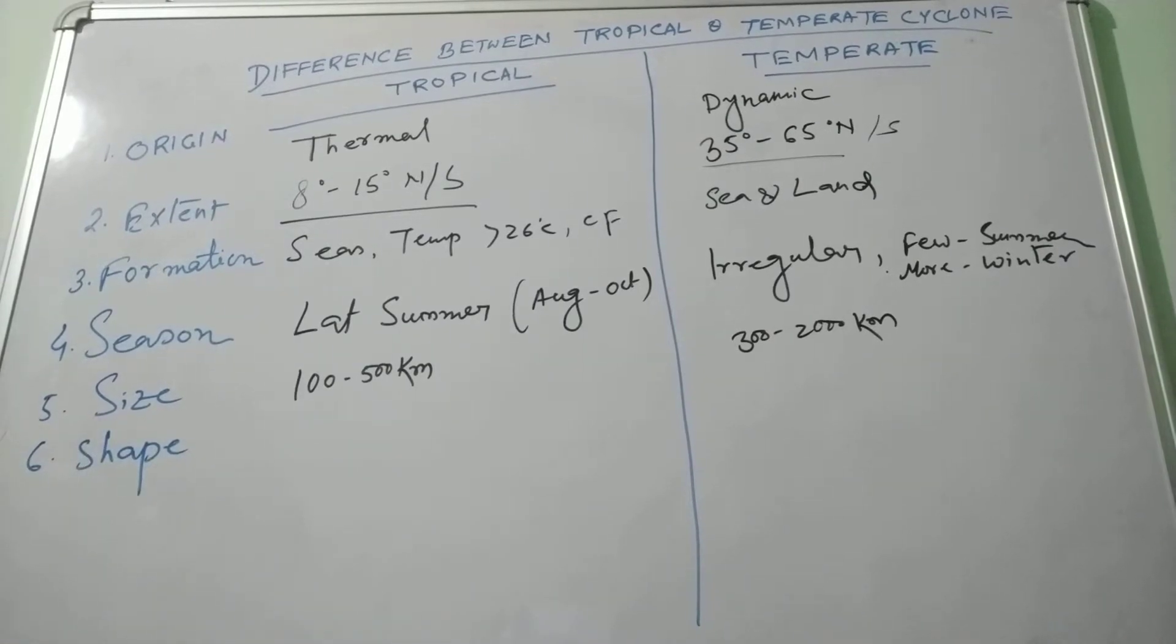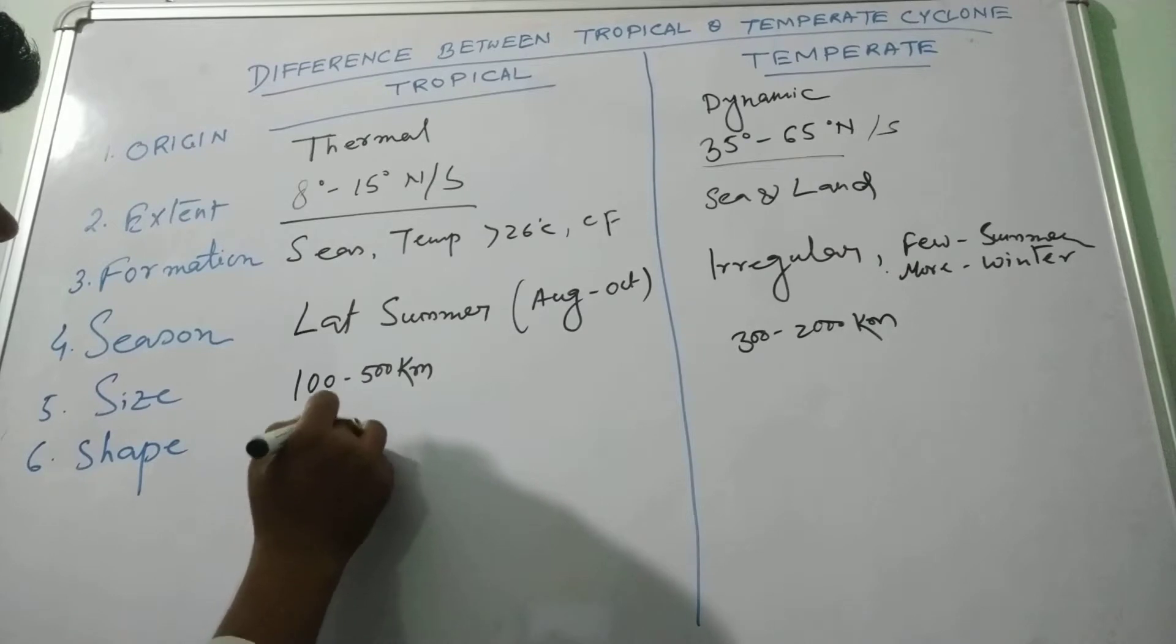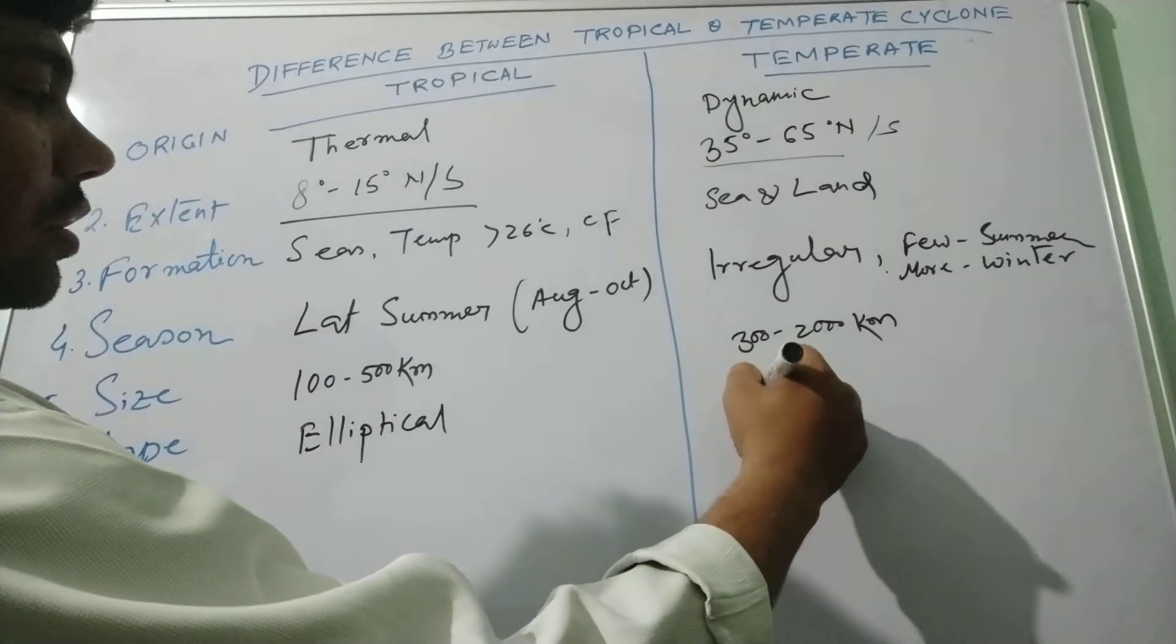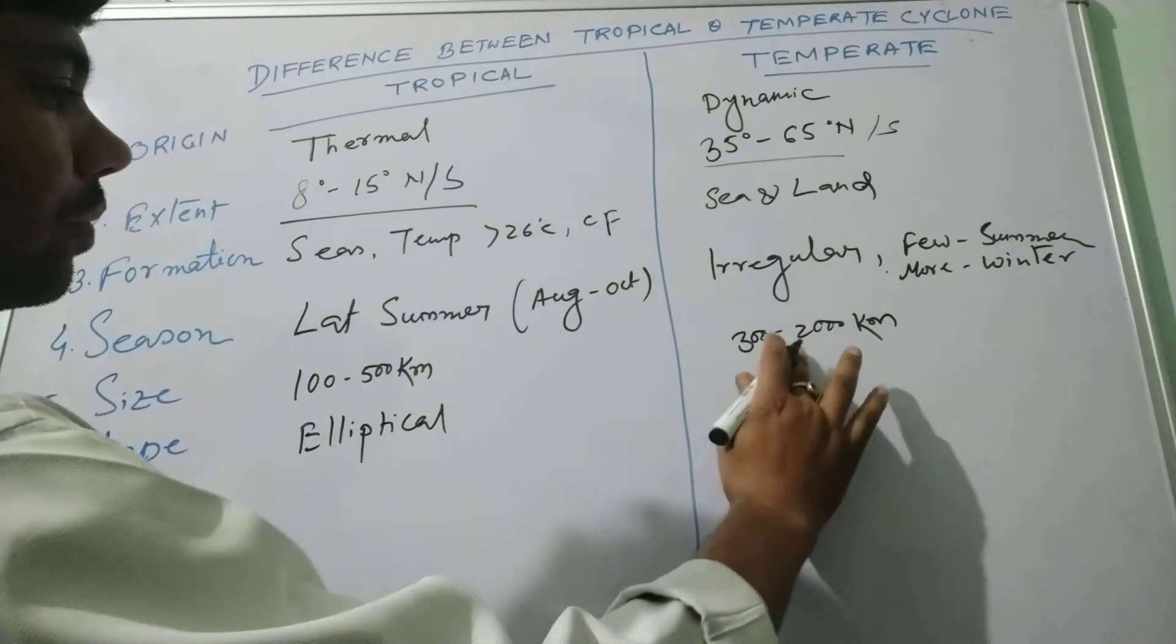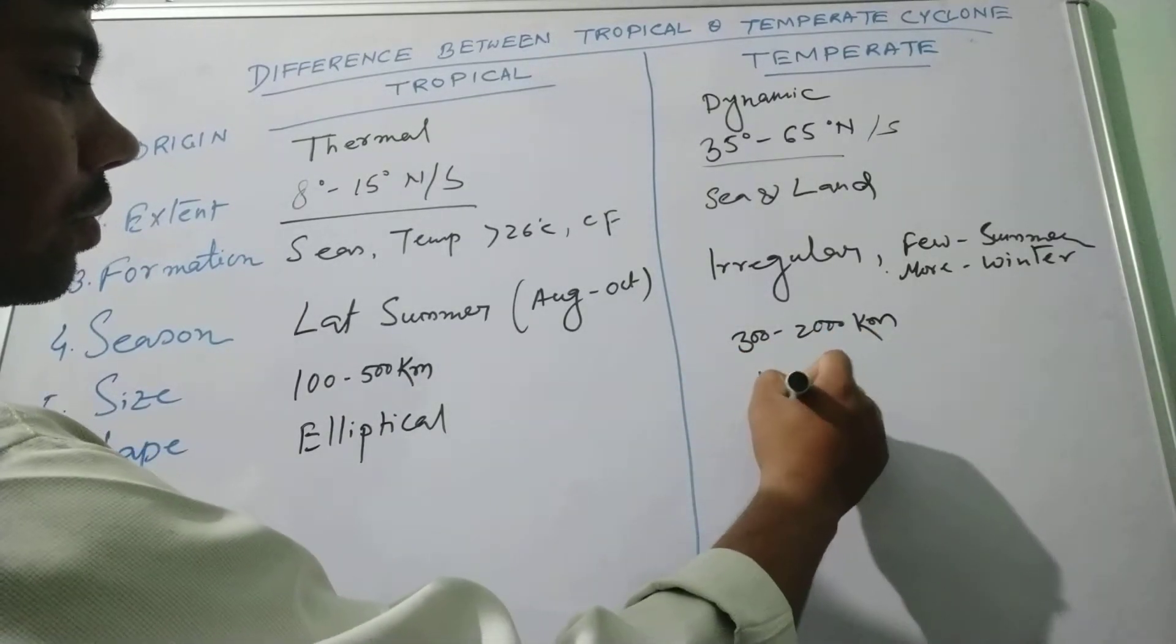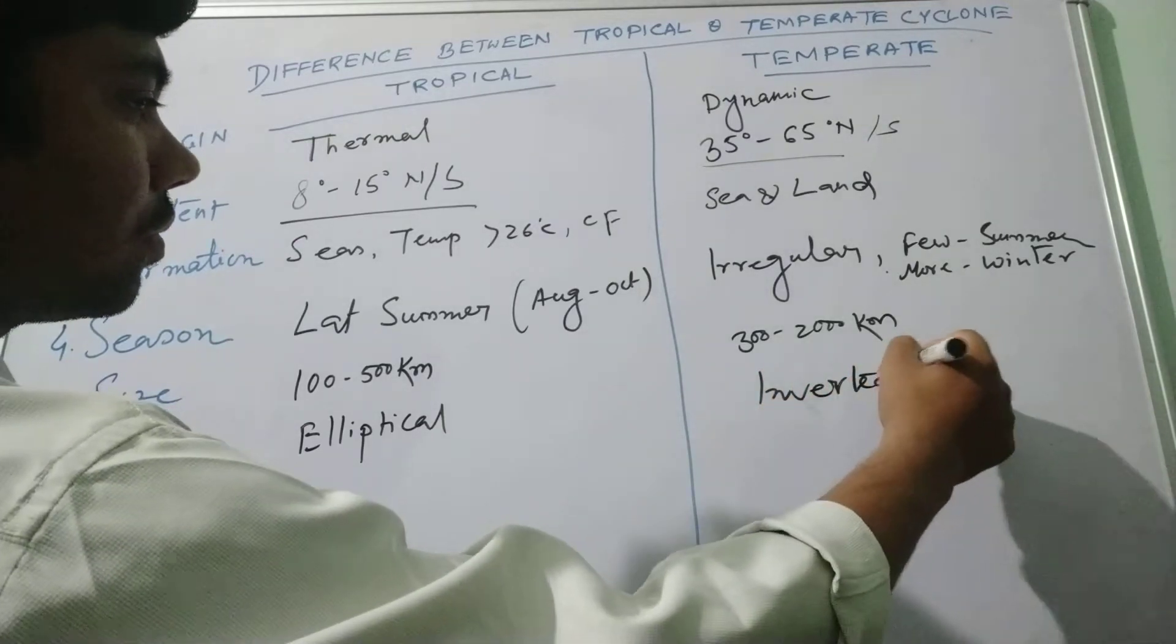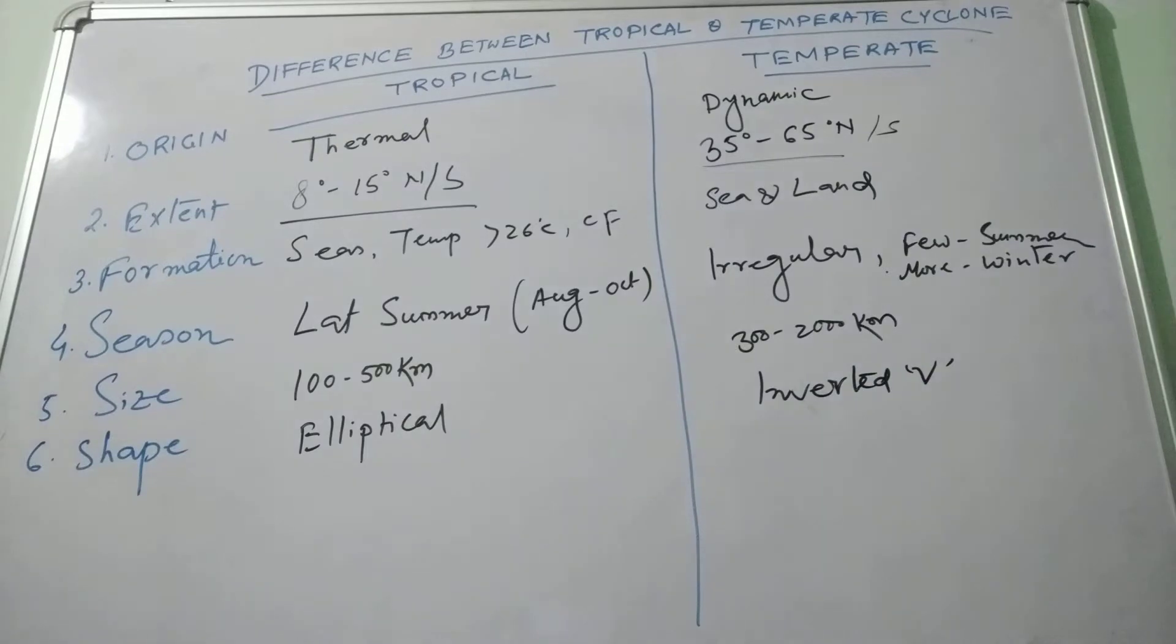Shape, this is generally elliptical in nature, elliptical shape. This is inverted V. Most of the cases, they are inverted V.